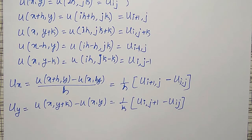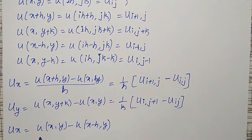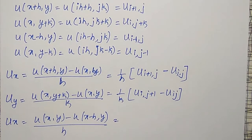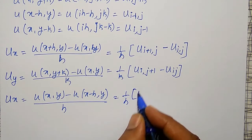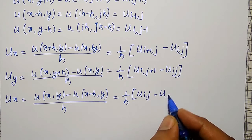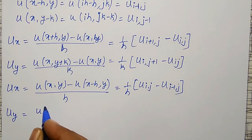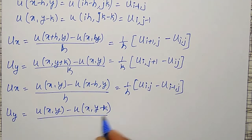Backward differences I can also write. For u_x, backward difference is u of x, y minus u of x minus h comma y, divided by h. In short notation, that is 1/h times u_{i, j} minus u_{i-1, j}. For u_y, backward difference is u of x, y minus u of x comma y minus k, divided by k.